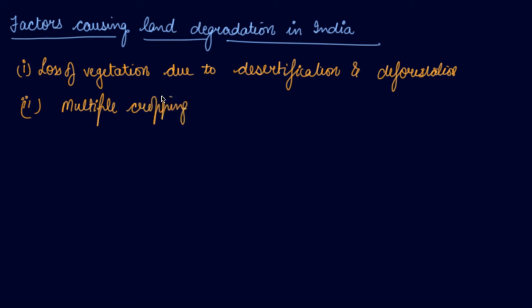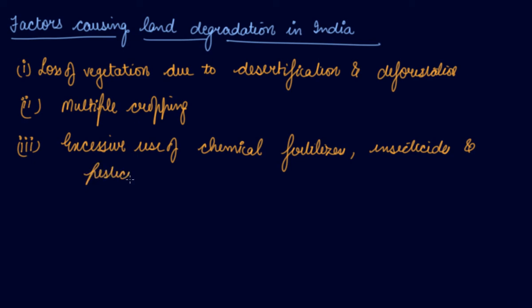Multiple cropping along with subsistence farming by the small and marginal holders who fail to replenish fertility of soil. Third comes excessive use of chemical fertilizers, insecticides, and pesticides, which raises productivity but affects the soil fertility.